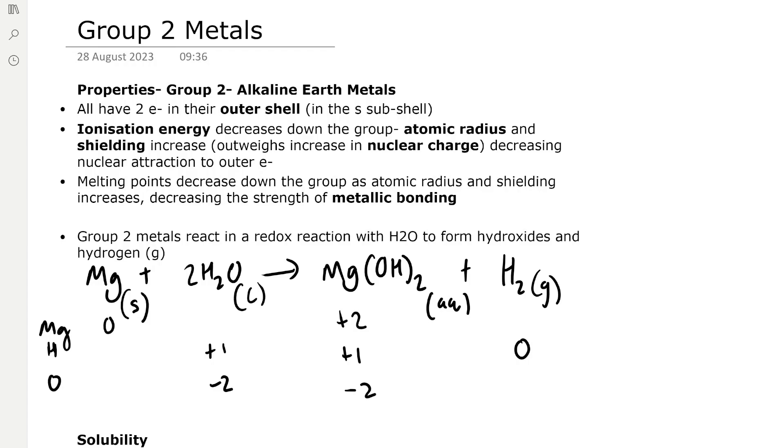You can see from the oxidation numbers that magnesium goes from 0 to +2 and hydrogen goes from +1 to 0. So this is a redox reaction because both reduction of the hydrogen and oxidation of the magnesium take place.